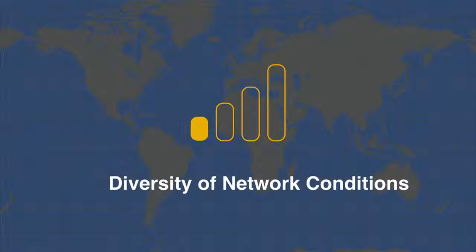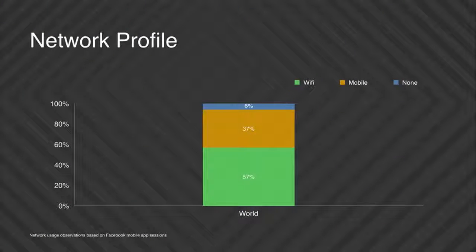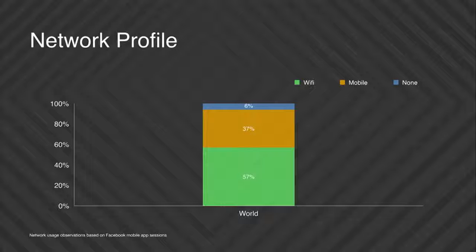Now that we've talked about the diversity of devices, the next place with a lot of diversity is network conditions. In some ways it's even more complicated than diversity of devices. This basic graph shows a breakdown of network conditions — just by Wi-Fi and cellular worldwide.